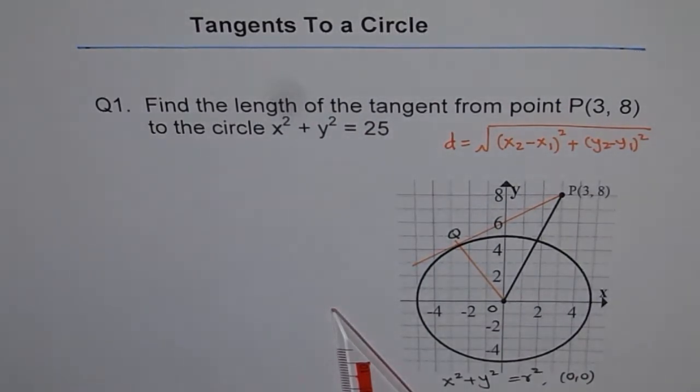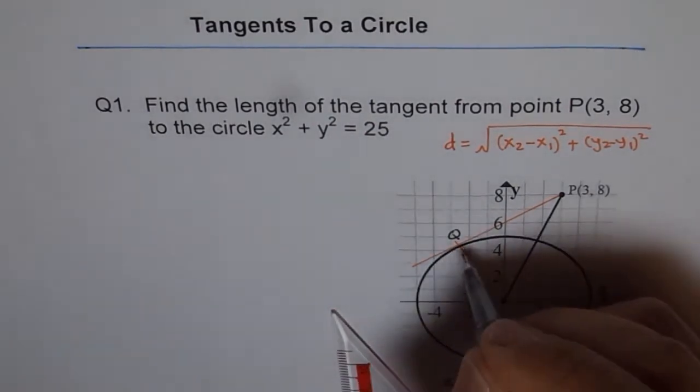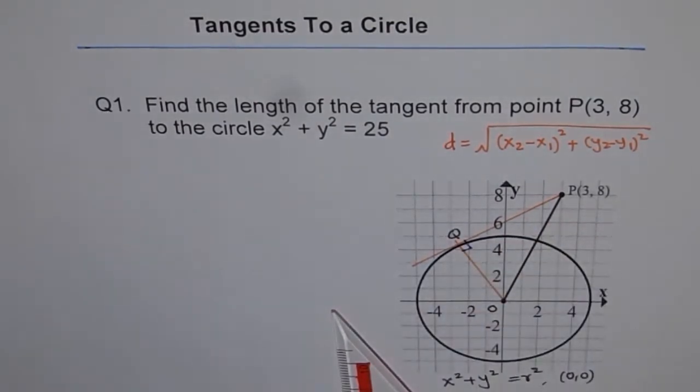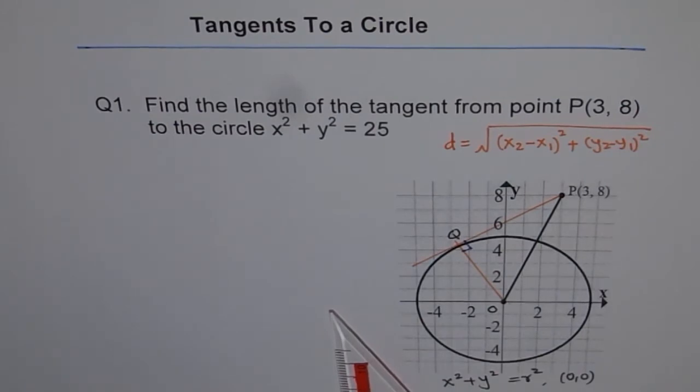And one more important thing which you should know and you know already, is that the tangent will always be at right angles to this radius. So this is the property which we are going to use to find the length PQ. PQ is the length of the tangent which we need to find.